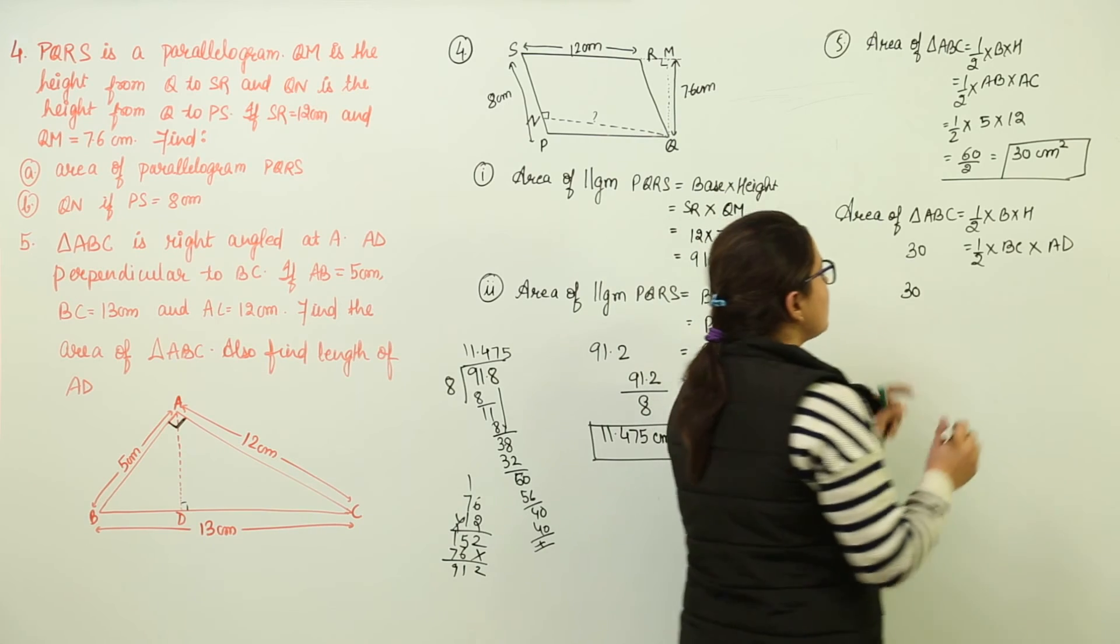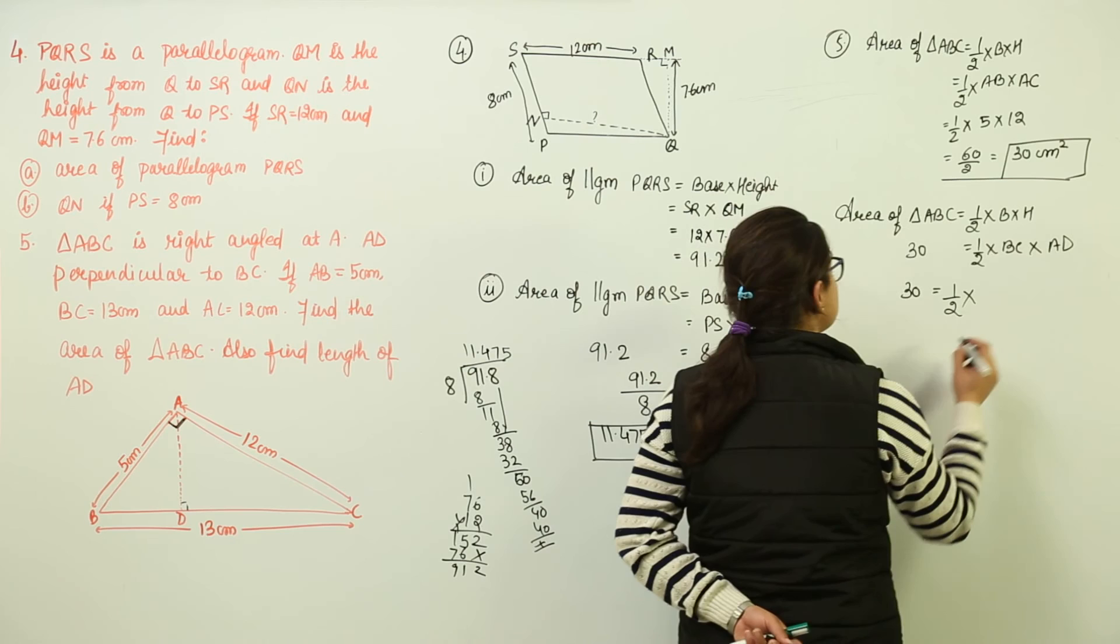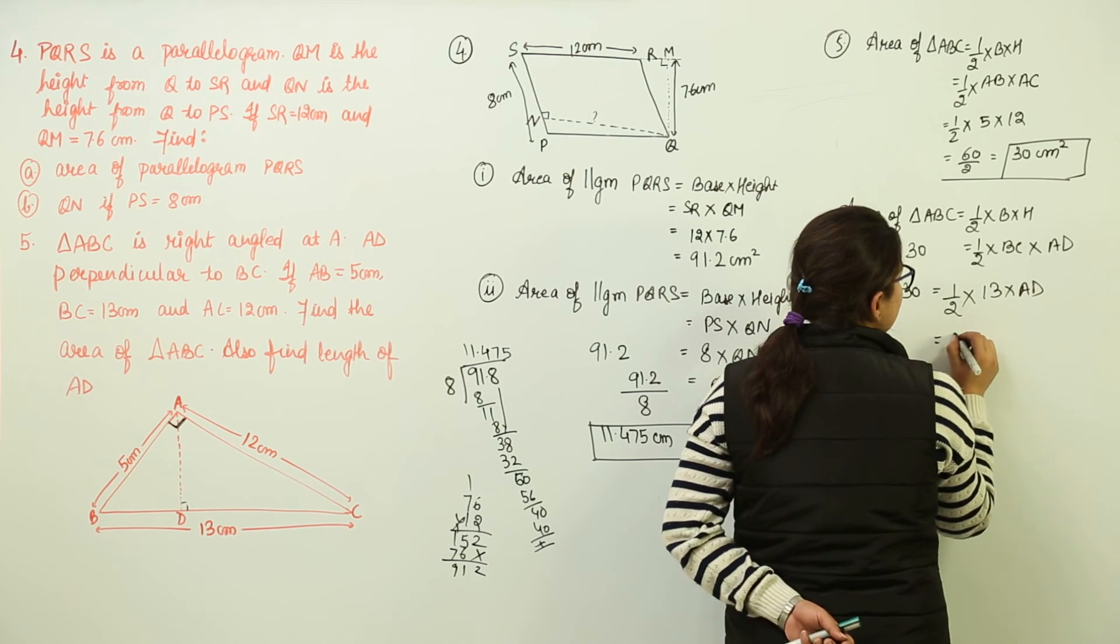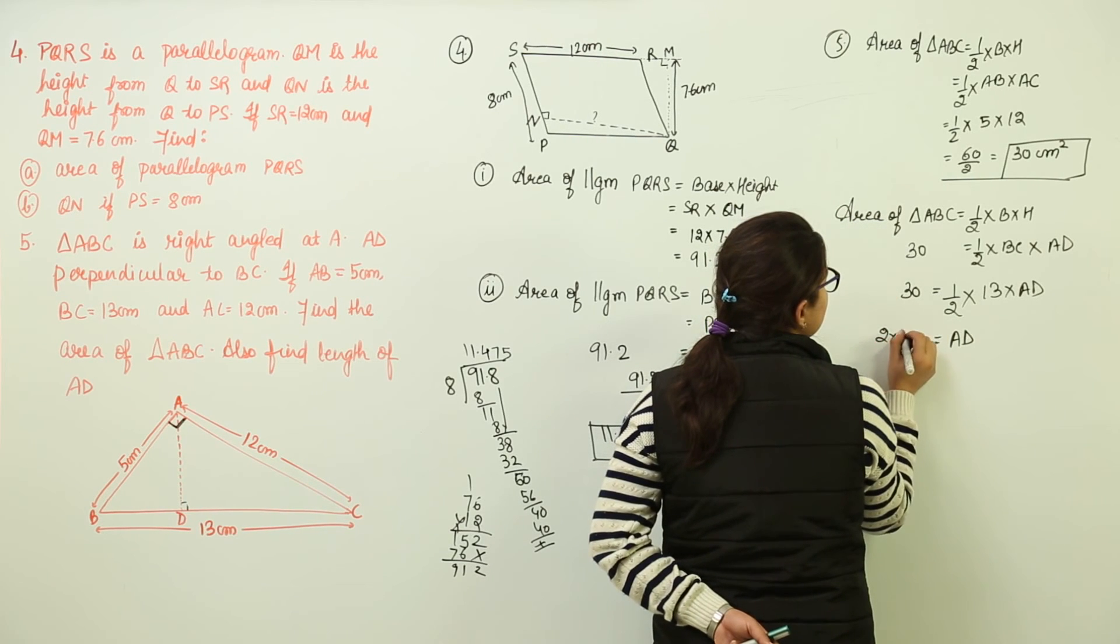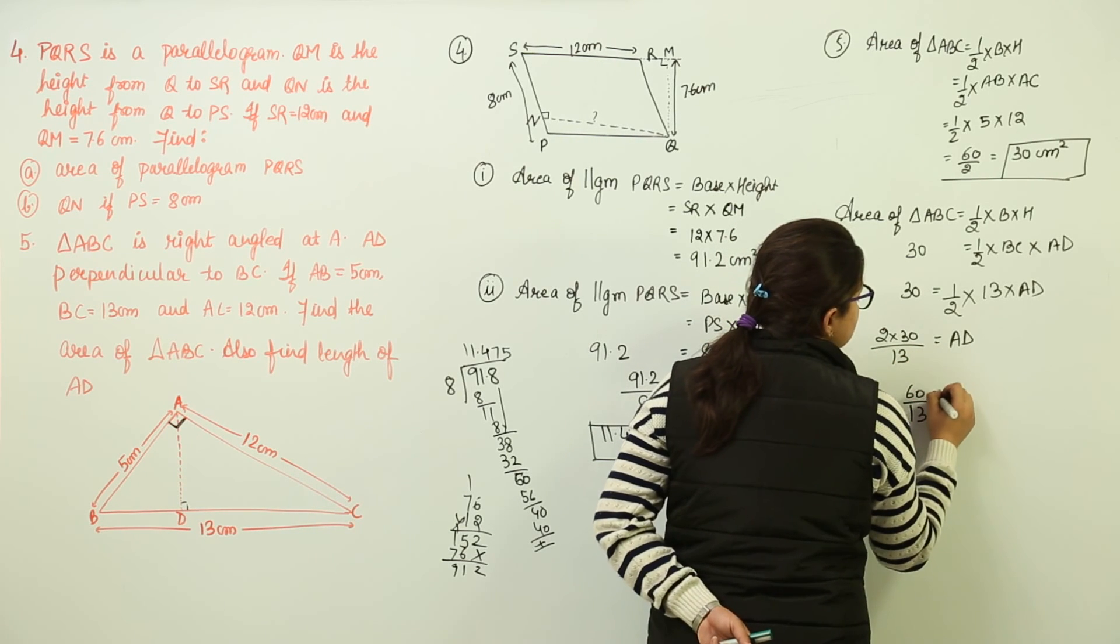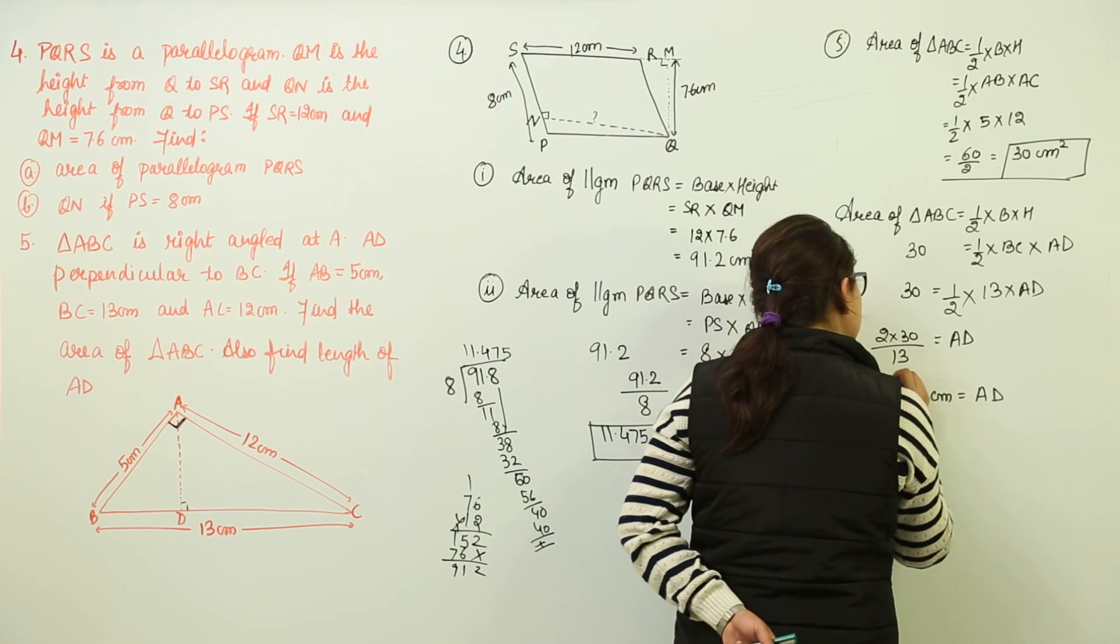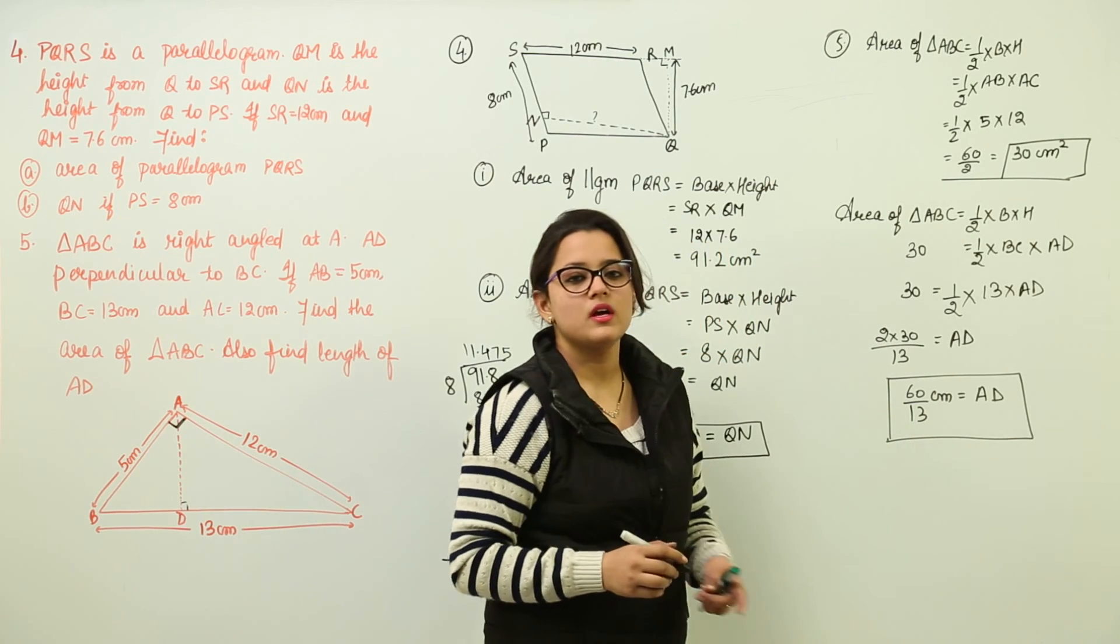So we place that value over the area and we get 1 by 2 into BC is also given to us as 13 and we will find out the AD. So we get AD equal to 2 into 30 whole upon 13. Now you get 60 upon 13 centimeters as AD. You can convert it into decimals or you can leave it as it is. This will be your answer.